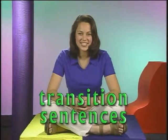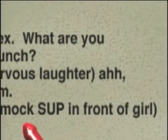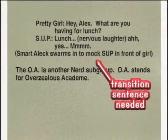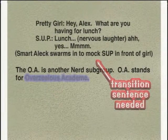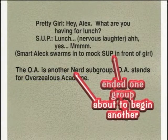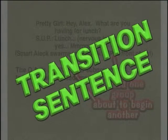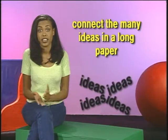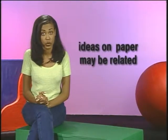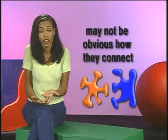Let's look at an example in Nathan's paper where Sam has marked that Nathan needs a transition sentence. Sam writes at the end of the seventh paragraph — the socially uncomfortable person section — that Nathan needs a transition into his next section on the overzealous academe. He's ended one social group and is about to begin another. In order to keep his reader from stumbling between sections, he needs a transition sentence. Transitions are very important, especially in long papers. They connect for your reader the many ideas that come up in a long paper. Even though all your ideas may be related, it may not be obvious to your reader how they connect. Some readers are no better than cattle with short attention spans — you have to spell things out for them.